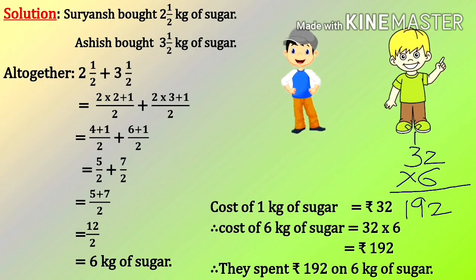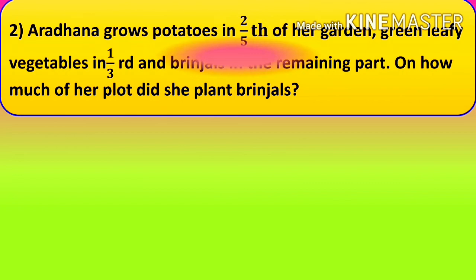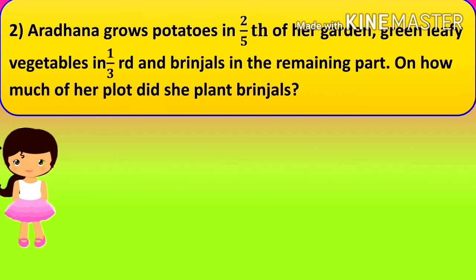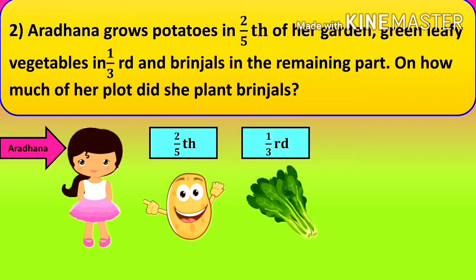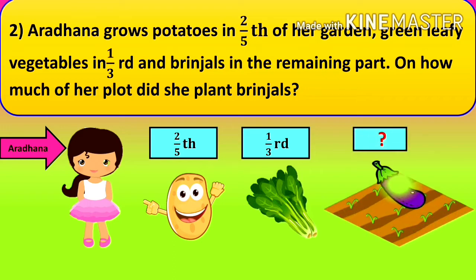Now, students, move to Question Number 2. Question 2: Aradhana grows potatoes in 2/5 of her garden, green leafy vegetables in 1/3, and brinjal in the remaining part. On how much of her plot did she plant brinjal? Aradhana has grown potatoes in 2/5 and green leafy vegetables in 1/3 of the garden. We have to find the remaining part where she grows brinjal.